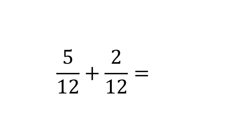Here's another example where the denominators are the same — they're both twelve. So we leave that as twelve and add the numerators together. Five add two gives us seven, so five twelfths add two twelfths is seven twelfths.